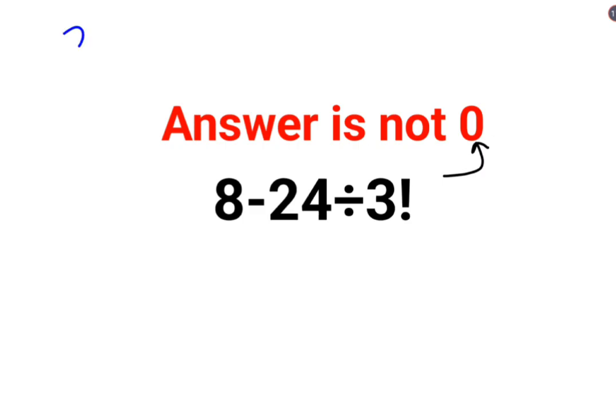Because see, 24 divided by 3 factorial. Lot of people make the mistake of taking this 3 factorial as nothing but just 3. So when you divide 24 by 3, the answer is supposed to be 8.